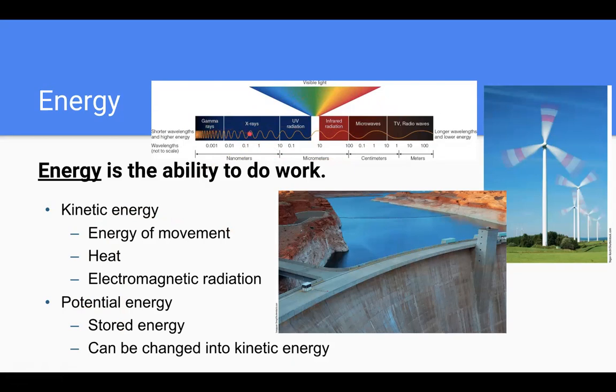So gamma rays, x-rays, they have a lot more energy than say at the other end of this spectrum, like the radio waves have less. So getting hit by gamma rays is going to be a lot more dangerous than getting hit by radio waves. Visible light, I mean, that's really important. That's a lot of the sunlight that we're getting as well as UV radiation from the sun too.